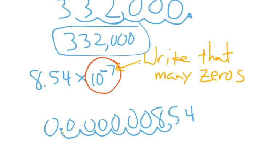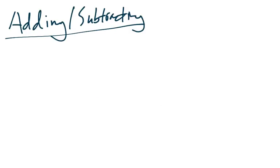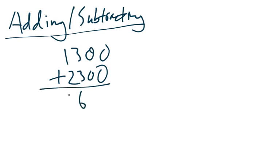Now let's talk about adding and subtracting them. Think about this. What would you do if you had 1,300 plus 2,300? You would just add them like this. You'd go, you know, 6, a bunch of zeros here, 3,600.